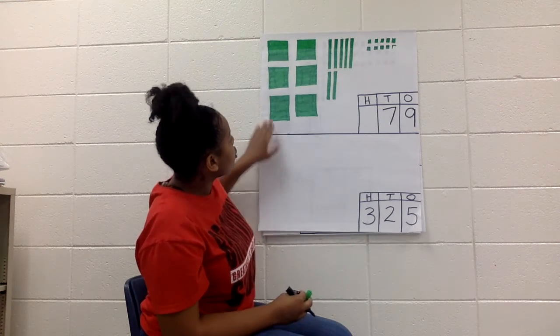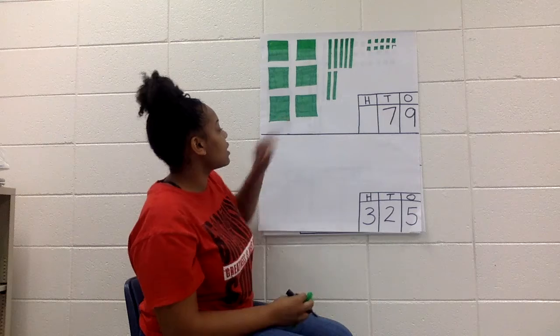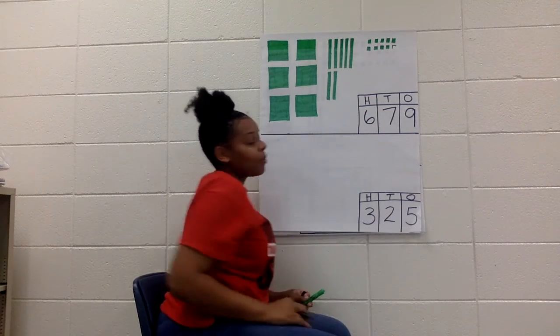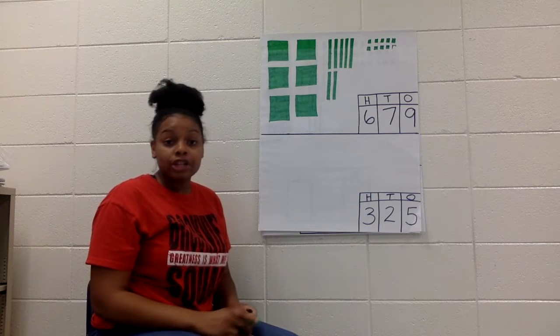Now I'm going to count my hundreds. 1, 2, 3, 4, 5, 6. Six hundreds. So my number is 679.